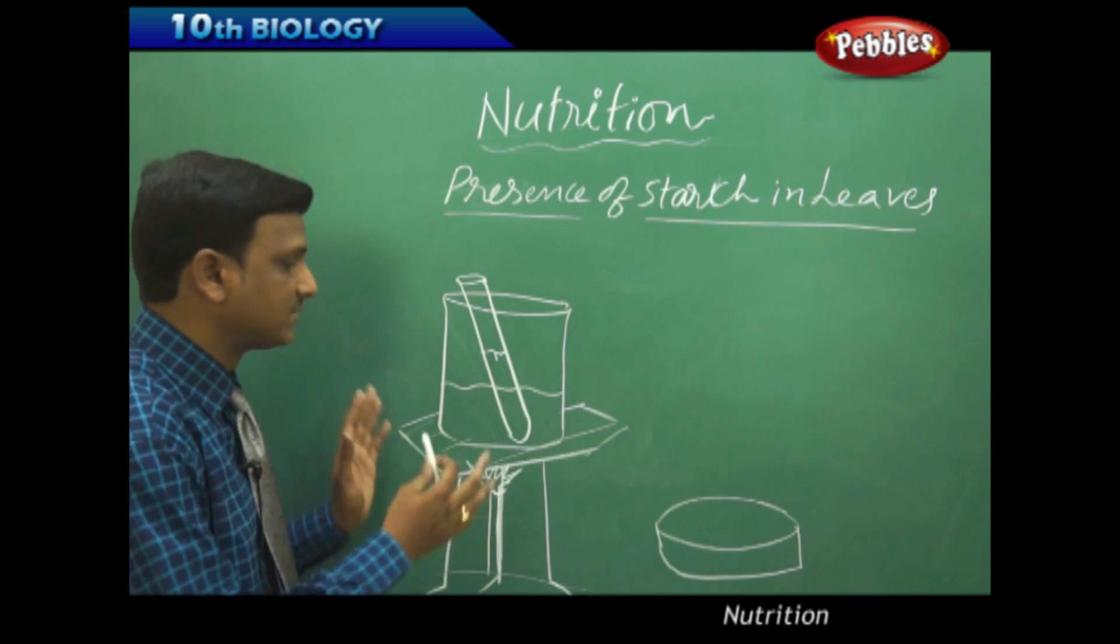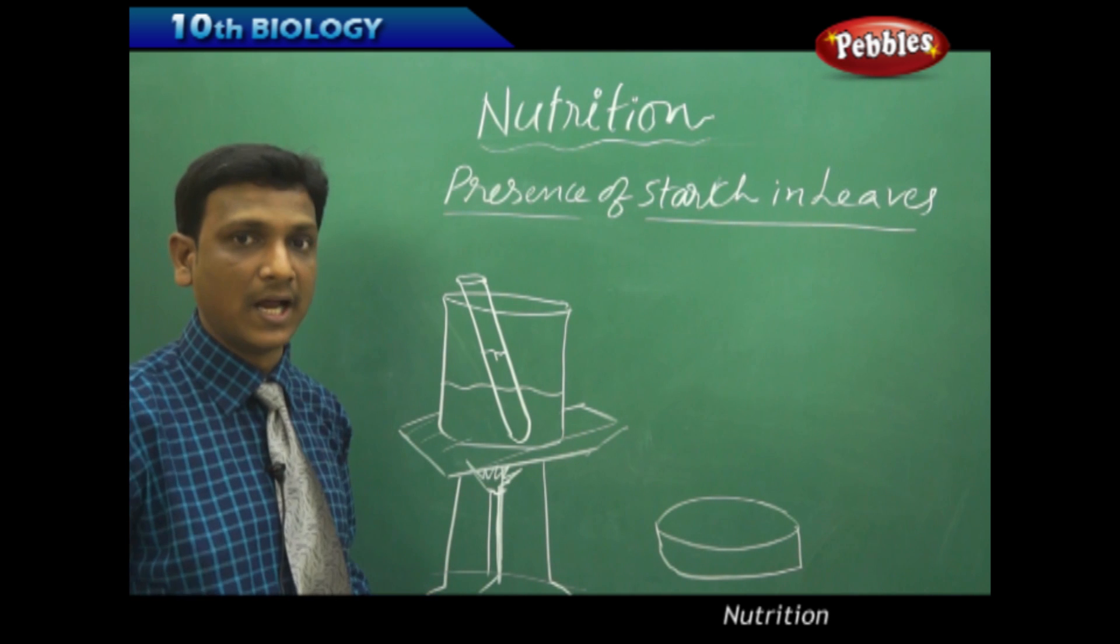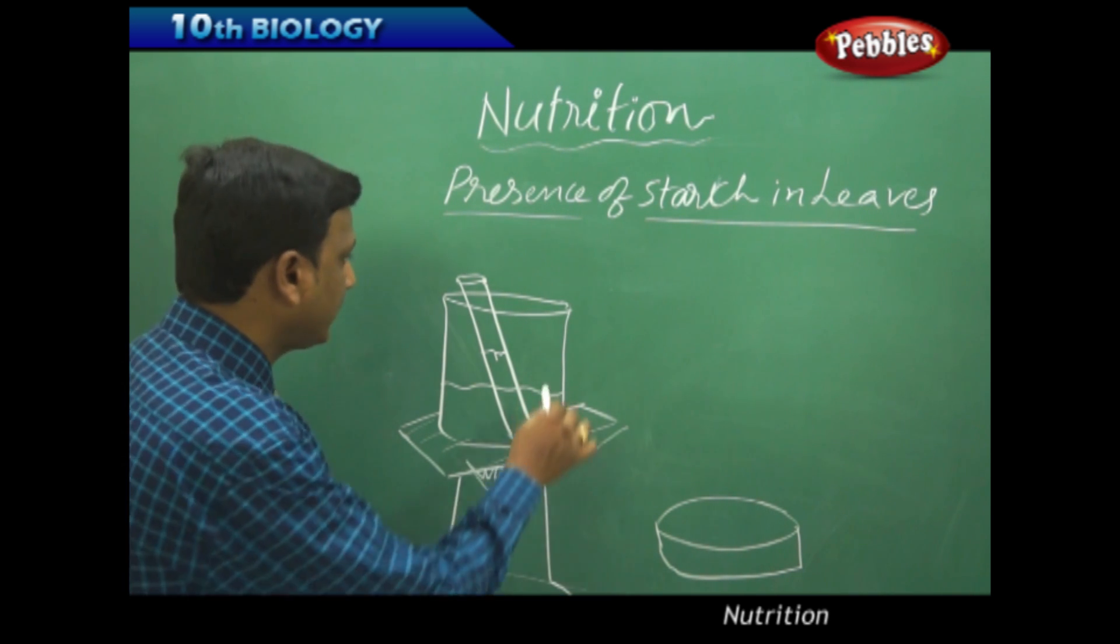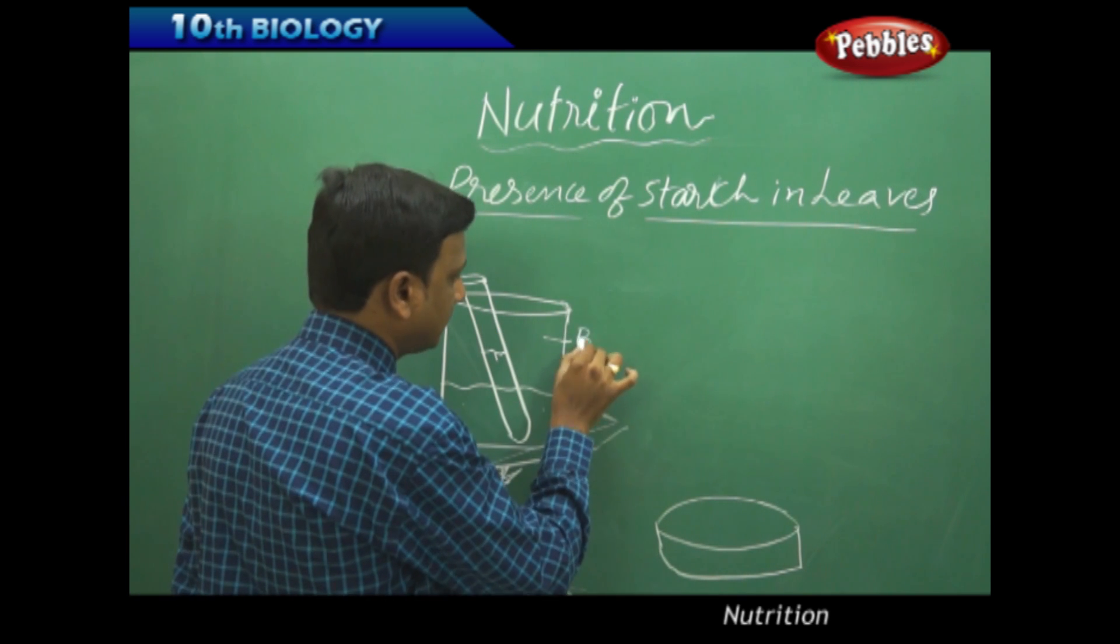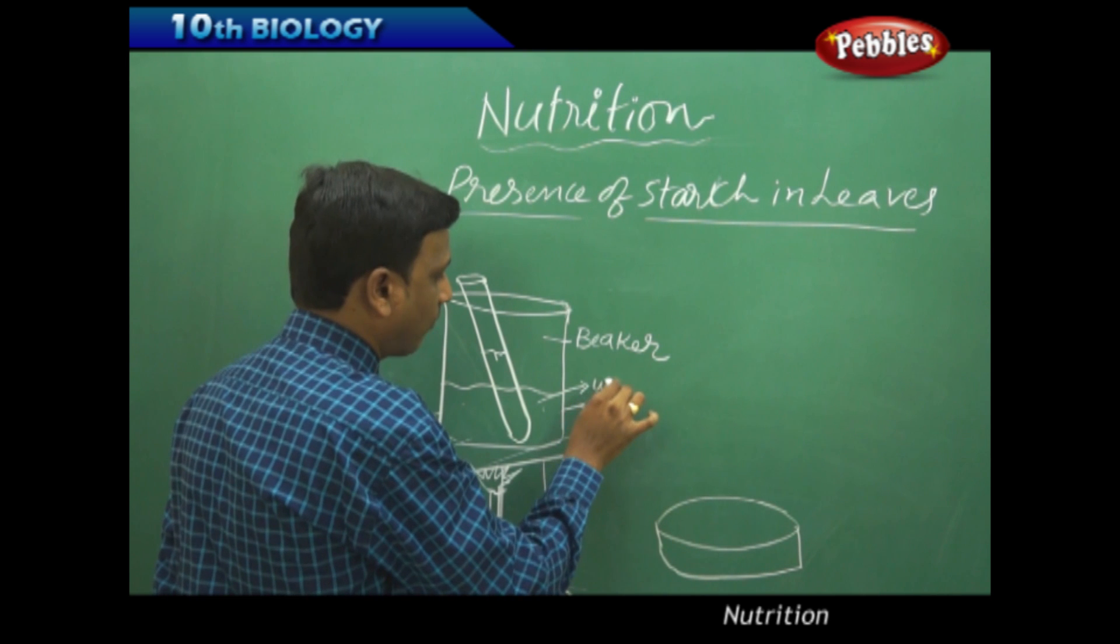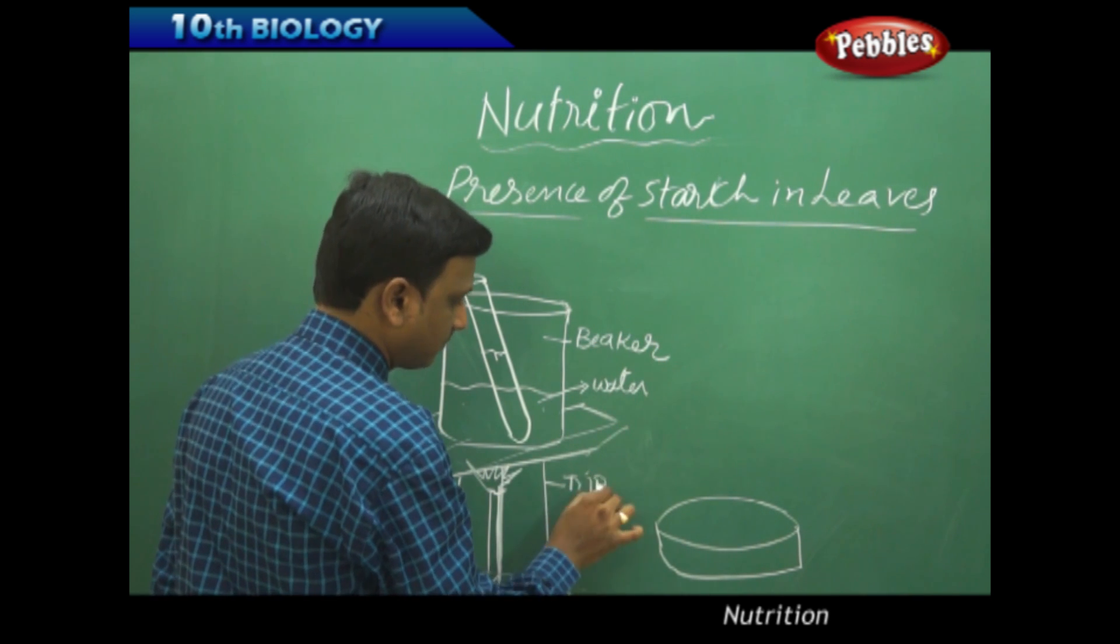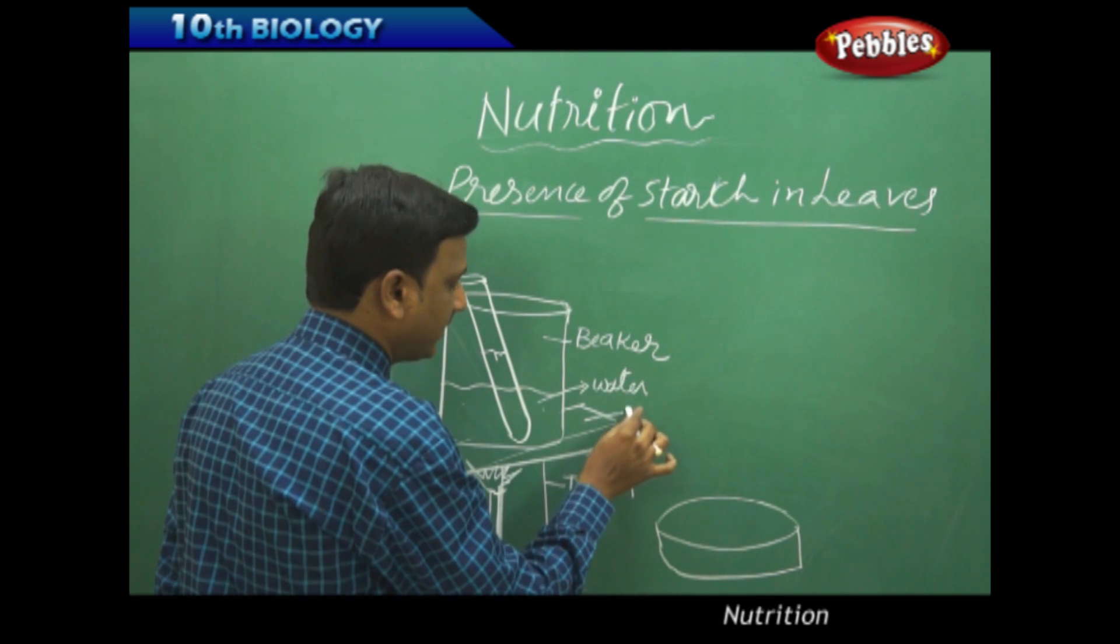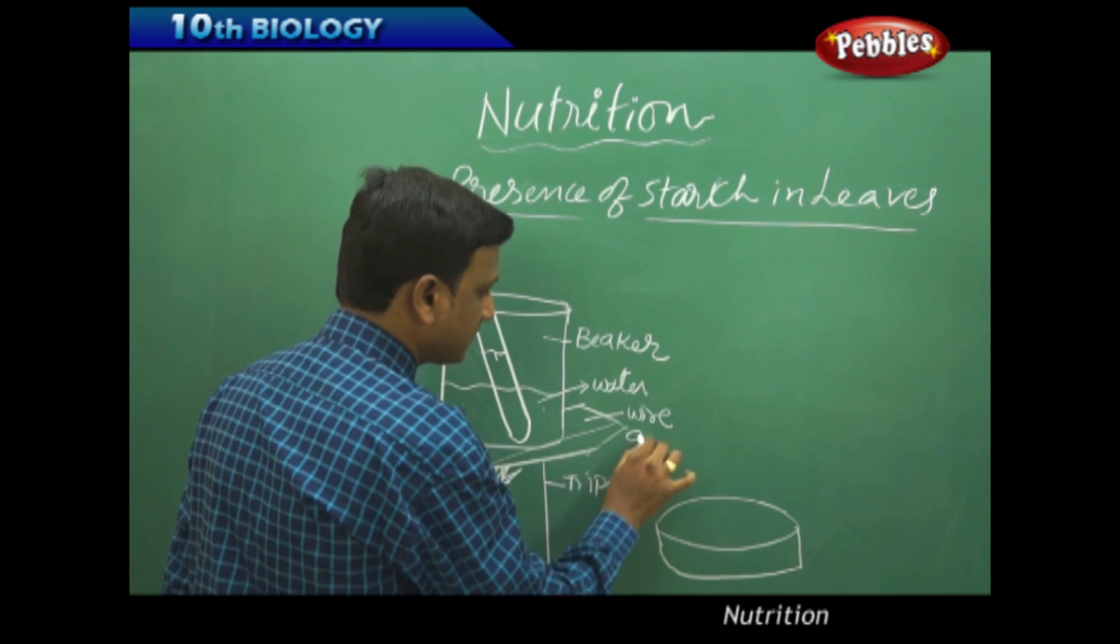Let us see, here we have some setup, some apparatus. Let us see what are these apparatus and how to do this activity. We need to have a beaker with water. So this is a beaker with some water. And we need a tripod. And we need asbestos gauze, a wire gauze.